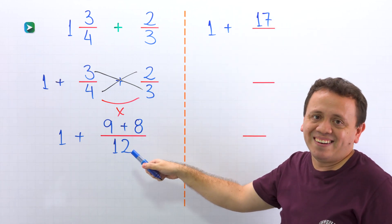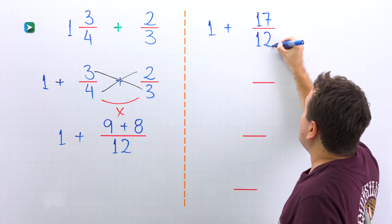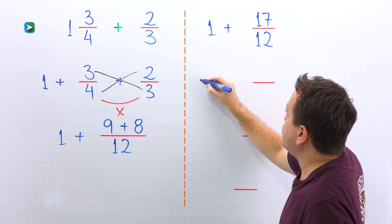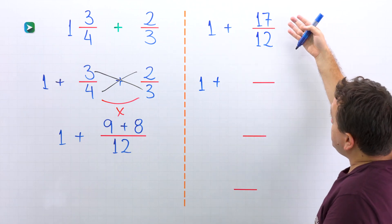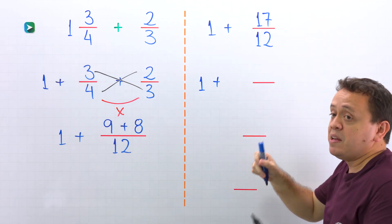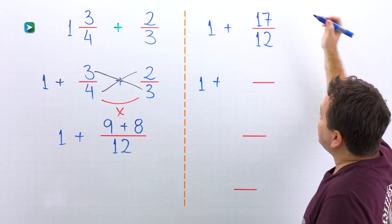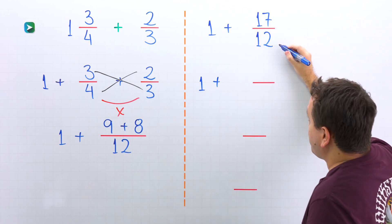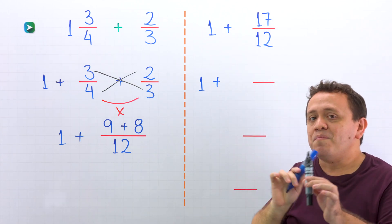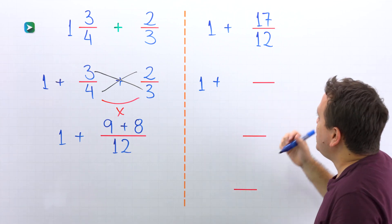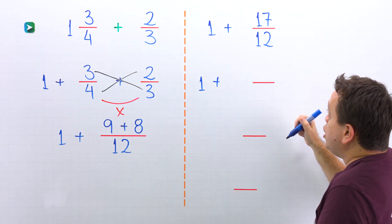Finally, the denominator stays the same: 12. So we have 1 plus 17 over 12. But 17 over 12 is an improper fraction, because the numerator 17 is greater than the denominator 12. Since we don't want an improper fraction in the final answer, we need to convert this improper fraction to a mixed number.